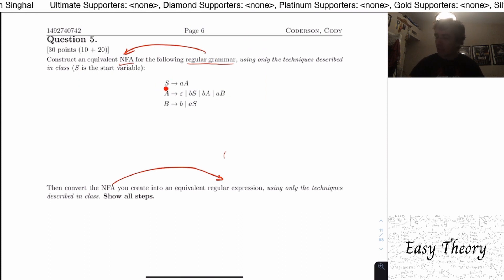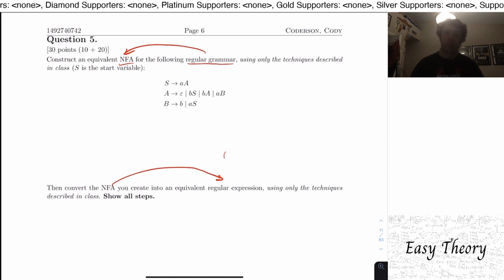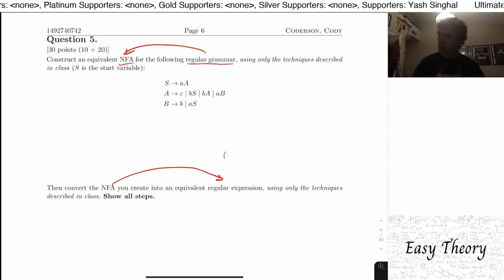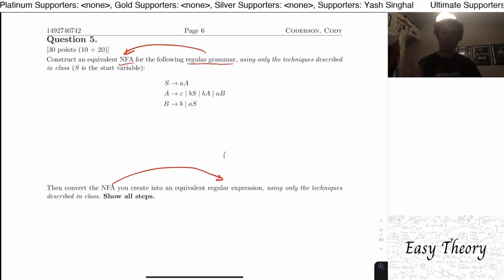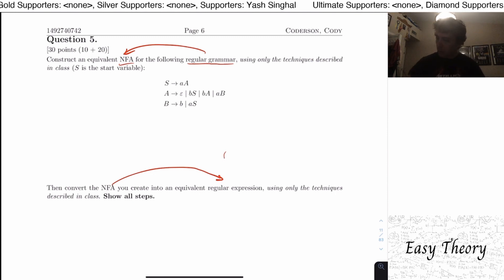When replacing one variable, we're either going to replace it with one other variable or with nothing. So we start with one variable and keep moving along with one variable until at some point we have no variables left. That means for building an NFA, we're going to be in one state at each point along the way.